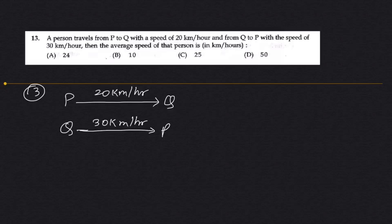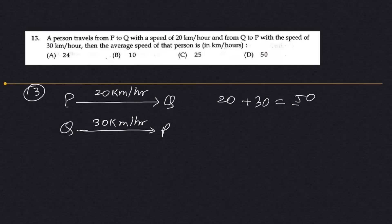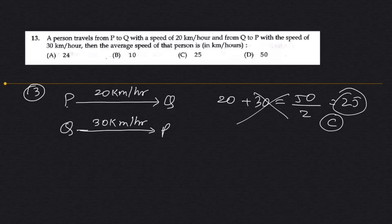The common mistake that almost everyone does in this question is: average speed P to Q is 20 km/h and Q to P is 30 km/h, so they say 50 divided by 2 equals 25. Option C. This is wrong.